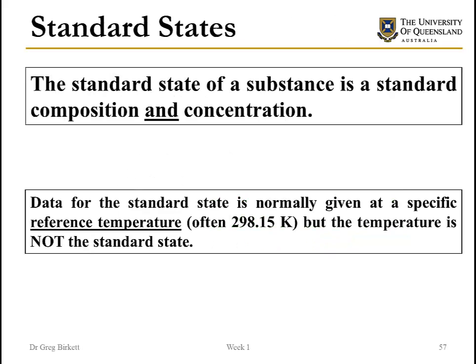So what is a standard state? The standard state of a substance is defined by its composition and its concentration. We define standard states so that we can tabulate data at a known condition. This data is normally tabulated at a particular temperature — heats of formation are typically tabulated at 298 Kelvin. However, that temperature is not defining the standard state; it is a reference temperature only.